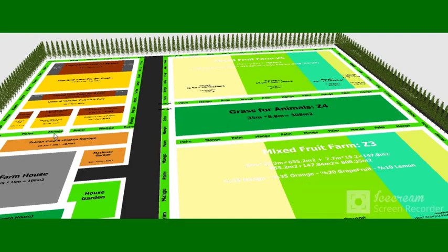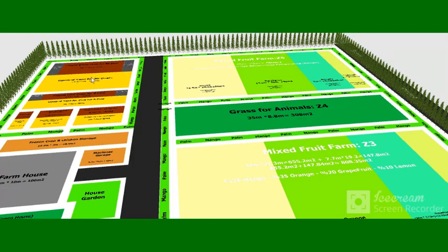Now let's look at the three-dimensional view of the farm. This is zone five with guava trees, fig trees, banana trees, and teen trees. Zone four is the animal crops area, about 300 square meters — 35 meters multiplied by 8–9 meters. Zone three has mango, orange, grapefruit, and lemon — eight kinds of mixed fruit. Here are the animals with an open yard, closed goat area, quarantine area, and grass storage area.